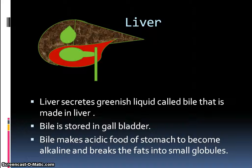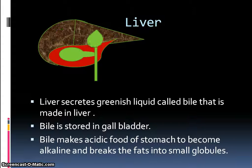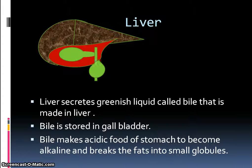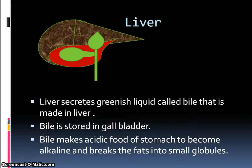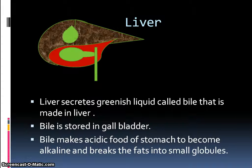The liver secretes a greenish liquid called bile, which is made in the liver and stored in the gallbladder. Bile makes the acidic food from the stomach alkaline and breaks fats into smaller globules.